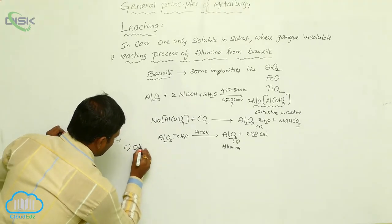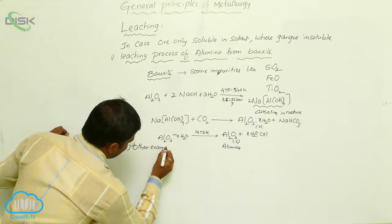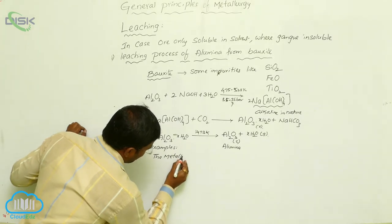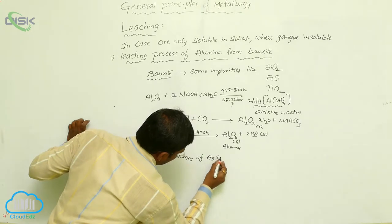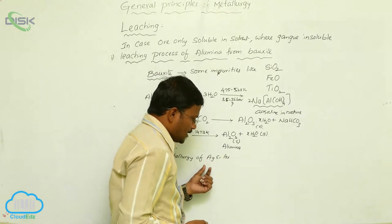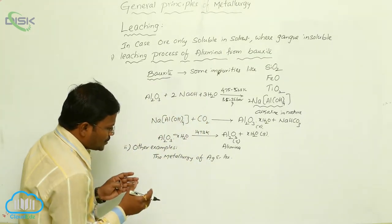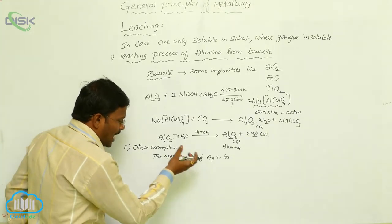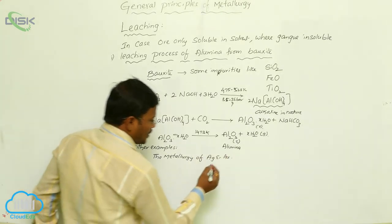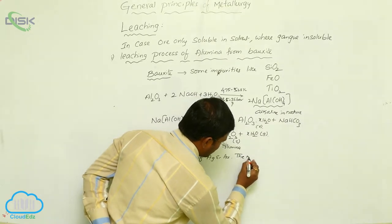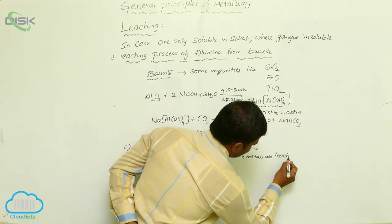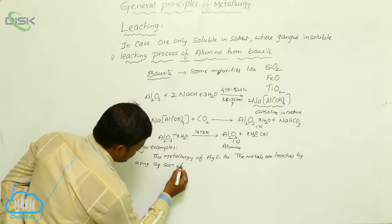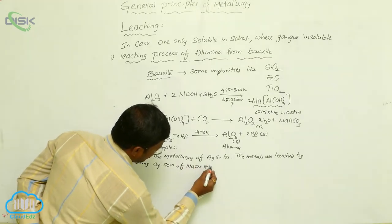Let us consider some more examples of leaching processes. During the metallurgy of silver and gold — Argentinum and Aurum — the respective metals are leached with a dilute solution of sodium cyanide or potassium cyanide. That means, for the isolation of silver and gold from the earth's crust, these metals are leached using an aqueous solution of sodium cyanide or potassium cyanide.